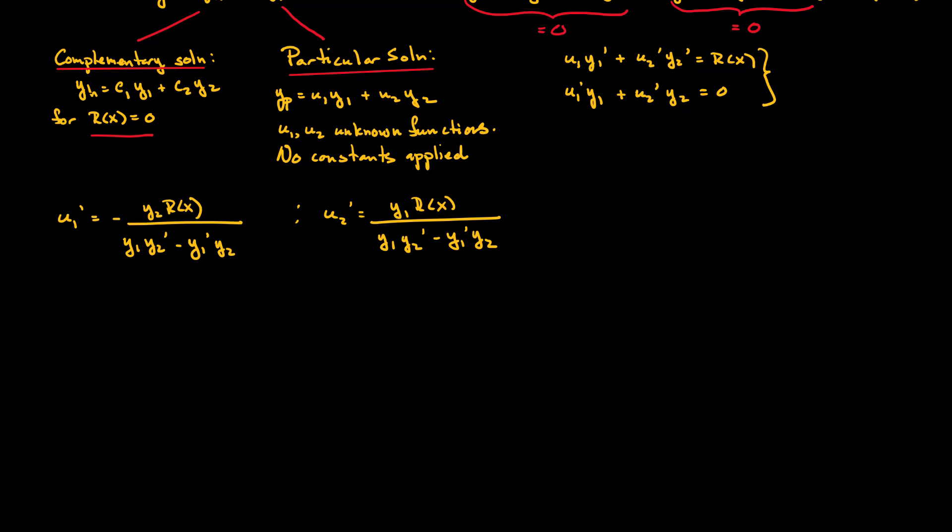The functions u1 and u2 themselves are obtained by integrating these two equations for u1' and u2'. So we have u1 equal to the negative of the integral of y2*r(x). Notice in the denominator of both that y1*y2' - y1'*y2 is just the Wronskian of the two functions y1 and y2. So we can write this as W(y1, y2).